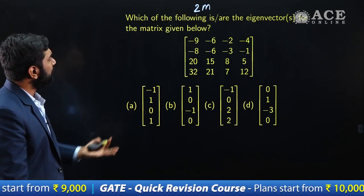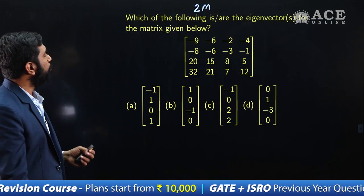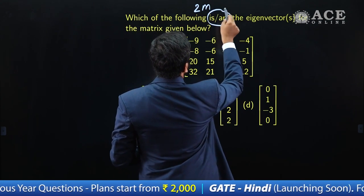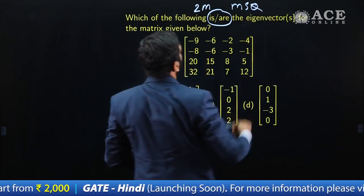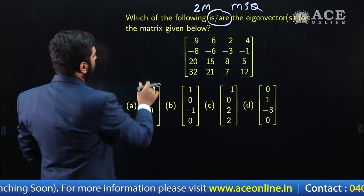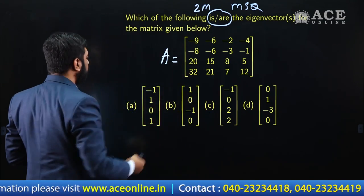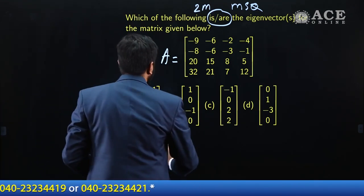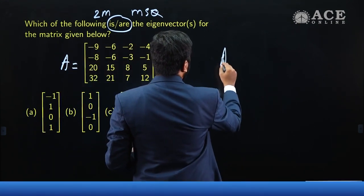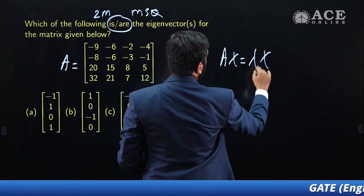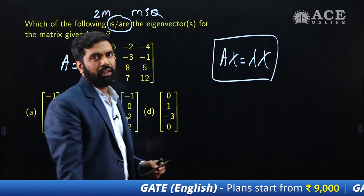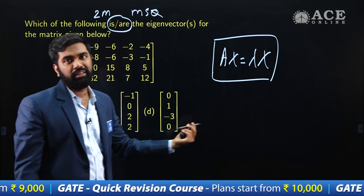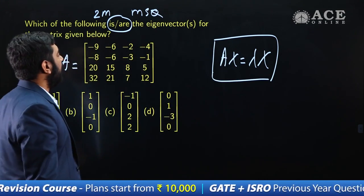This is the last problem from Engineering Mathematics — a two-mark MSQ (Multiple Select Question). Which of the following are eigenvectors for the given matrix A? Any vector X and scalar λ satisfying AX = λX are called an eigenpair of A. We just have to verify by multiplying A and X; if we get some scalar times X, then X is an eigenvector.